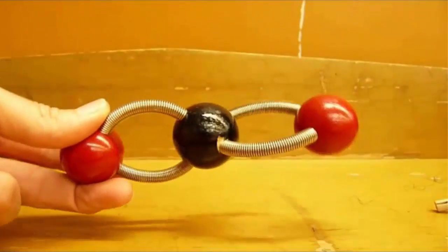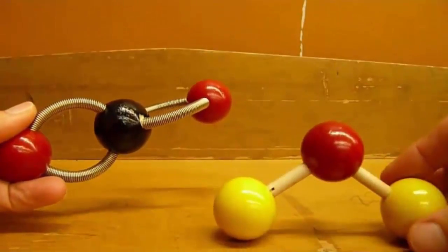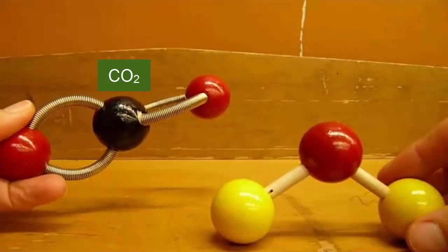Here you see a carbon dioxide molecule, and we will bring in a water molecule—CO2 for the carbon dioxide, H2O for the water molecule. These two molecules can combine to create carbonic acid, which I will demonstrate.